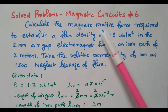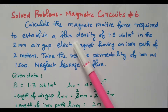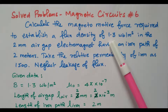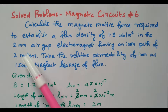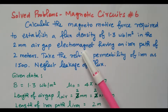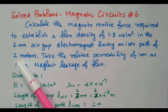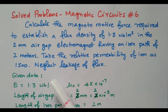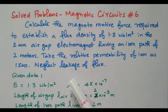Calculate the magnetomotive force required to establish a flux density of 1.3 Weber per meter square in the 2 millimeter air gap of an electromagnet having an iron path of 2 meters. Take the relative permeability of the iron as 1500 and neglect the leakage flux.